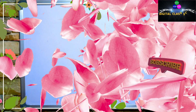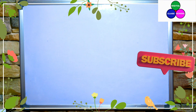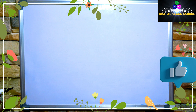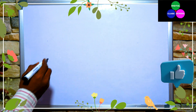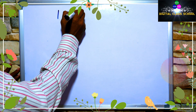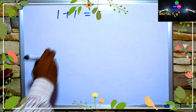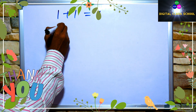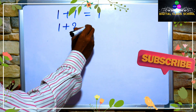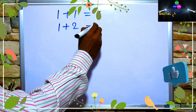Hi children, now you are learning first edition table. 1 plus 1 is equal to 3.